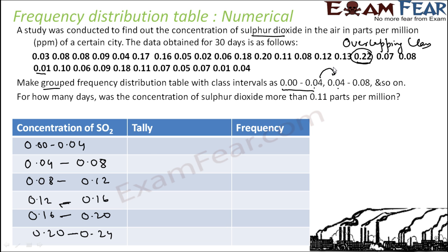Each class has a class size of 0.04. So to 0.04 I add 0.04 to get 0.08, add 0.04 to get 0.12, add 0.04 to get 0.16, add 0.04 to get 0.20, and add 0.04 to get 0.24. Let's start.